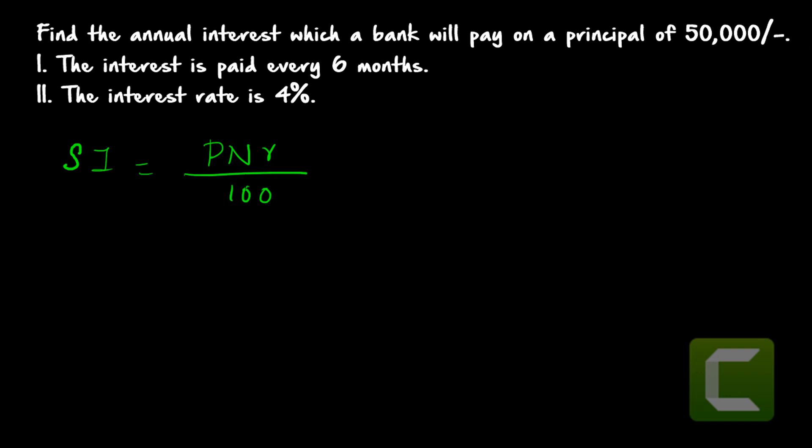For data sufficiency questions you must be thorough with all formulas — you just need to determine whether the statements are sufficient, not actually solve the problem, which saves time. From statement one, the interest is paid every six months, so N = 2. We have P = 50,000, but we don't know R, so statement one alone is not sufficient.